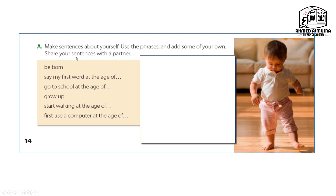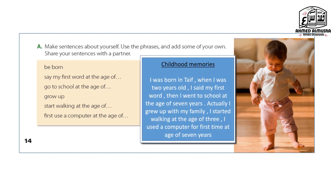Exercise A: Make sentences about yourself. Use phrases like 'be born,' 'say the first word at the age of,' 'go to school at the age of,' 'grew up,' 'start working at the age of,' 'first use a computer at the age of.' Here is an example — Childhood Memories: I was born, when I was two years old I said my first word, then I went to school at the age of seven. I grew up with my family, I started working at the age of three, I used a computer for the first time at the age of seven.